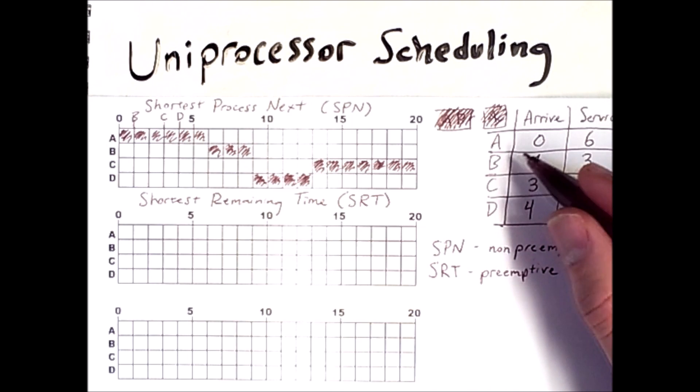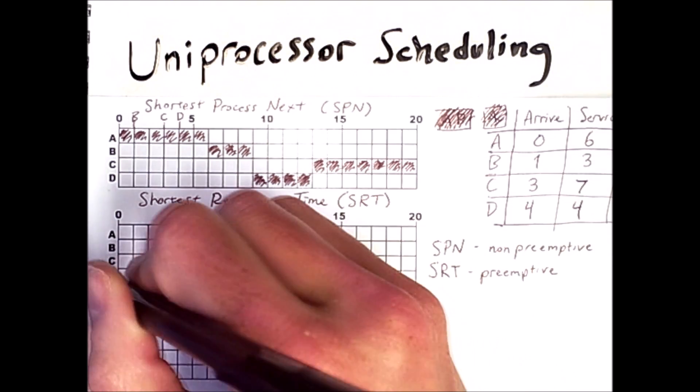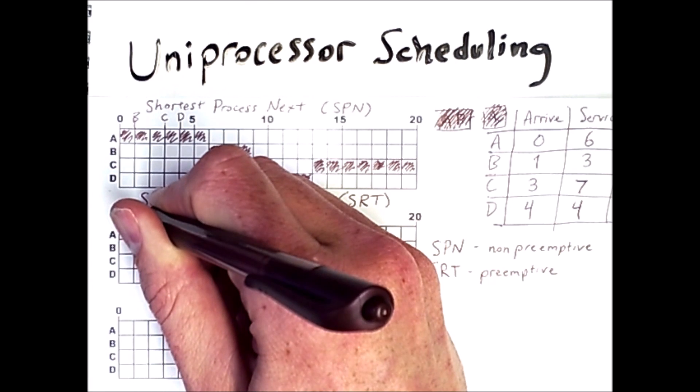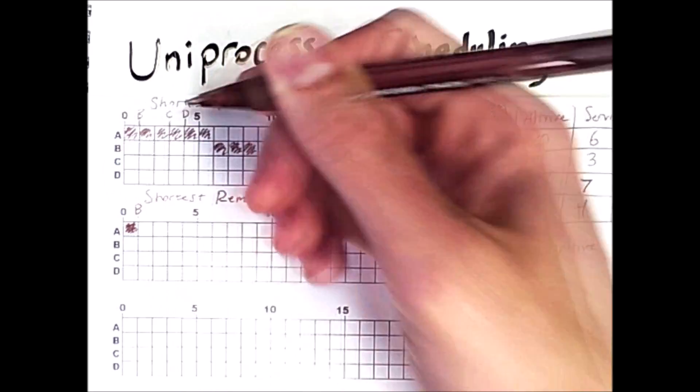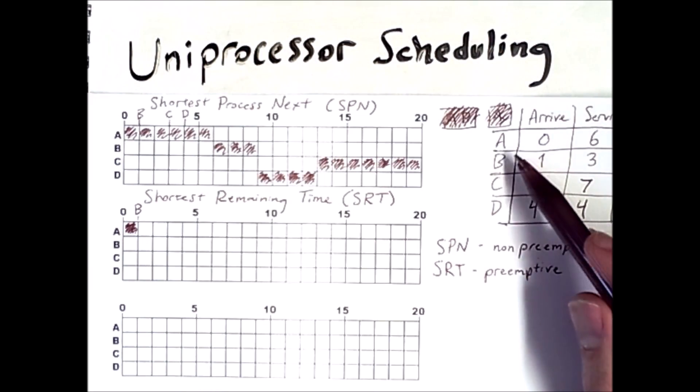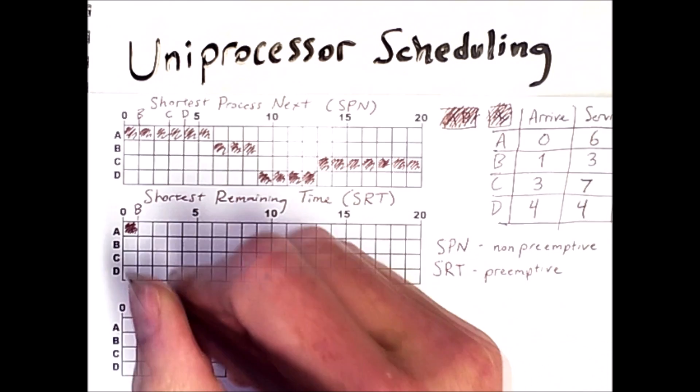A will still have to start at time zero because it's the only process in the system. But then when process B shows up at time one, we have to reassess which process has the shortest remaining time left. So after running for one unit, A has five units left to run, whereas the newly arrived B only has three units to run. So B will finish sooner, so we actually switch over to B and run that process.